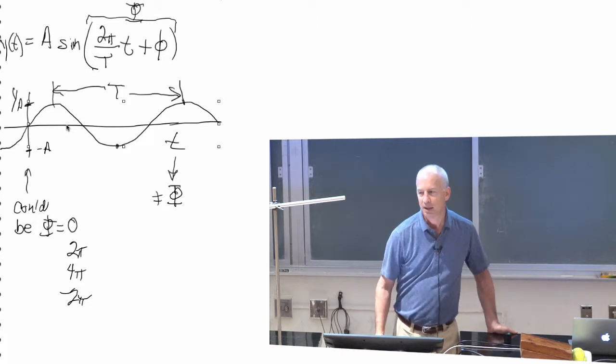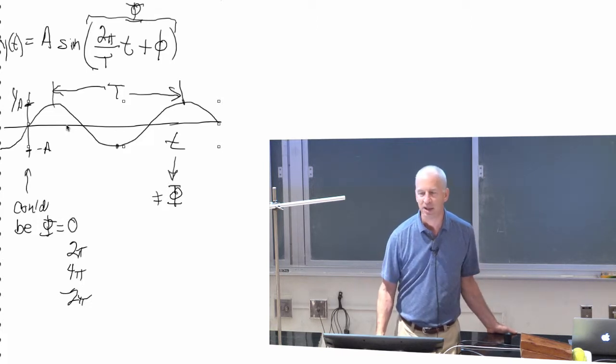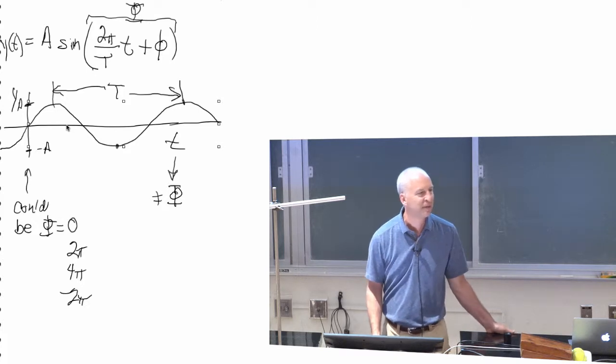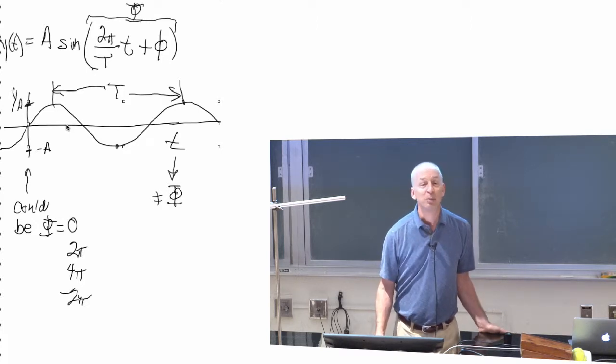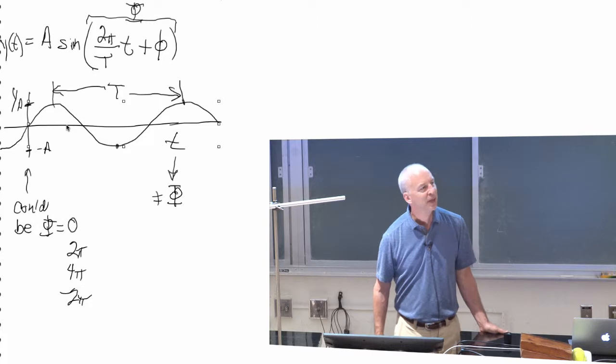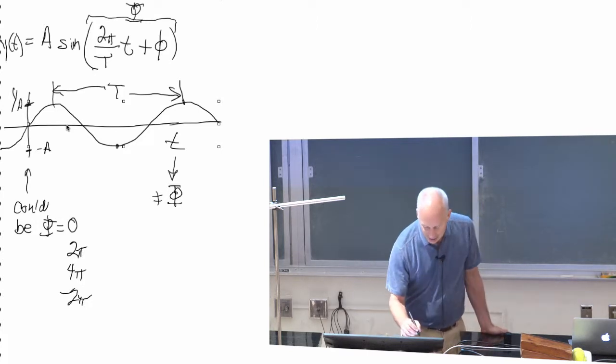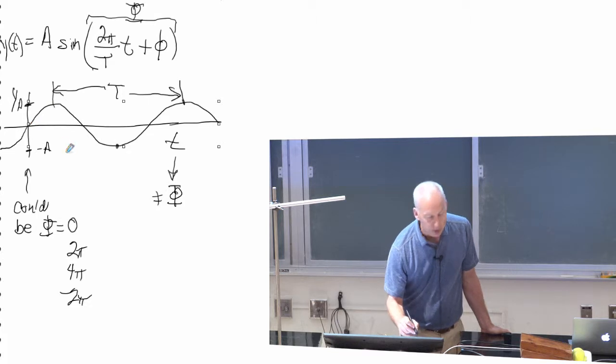You might say, why would I even put that in there? If I shift it by two pi, it makes no difference. Well, what if I shift it by pi? If I shift the entire graph by pi, then at t equals zero, instead of this thing going up, this thing would be coming down.